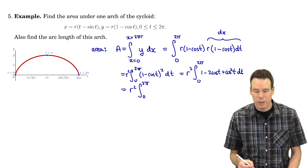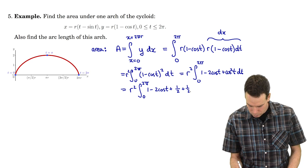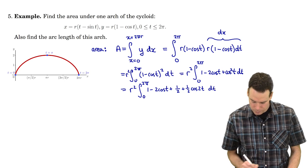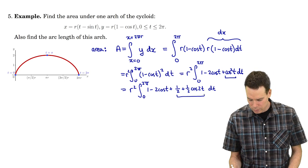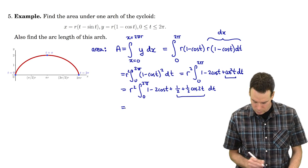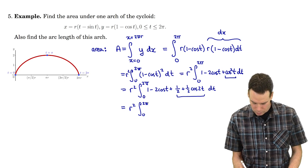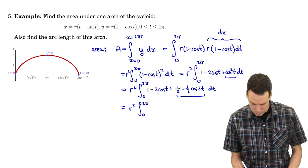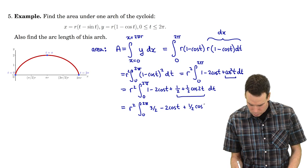Using the identity cos²t = 1/2 + (1/2)cos 2t, the integrand becomes 1 minus 2cos t plus 1/2 plus (1/2)cos 2t dt. Combining constants, 1 plus 1/2 gives 3/2, so we have r² times the integral from 0 to 2π of (3/2 minus 2cos t plus (1/2)cos 2t) dt.